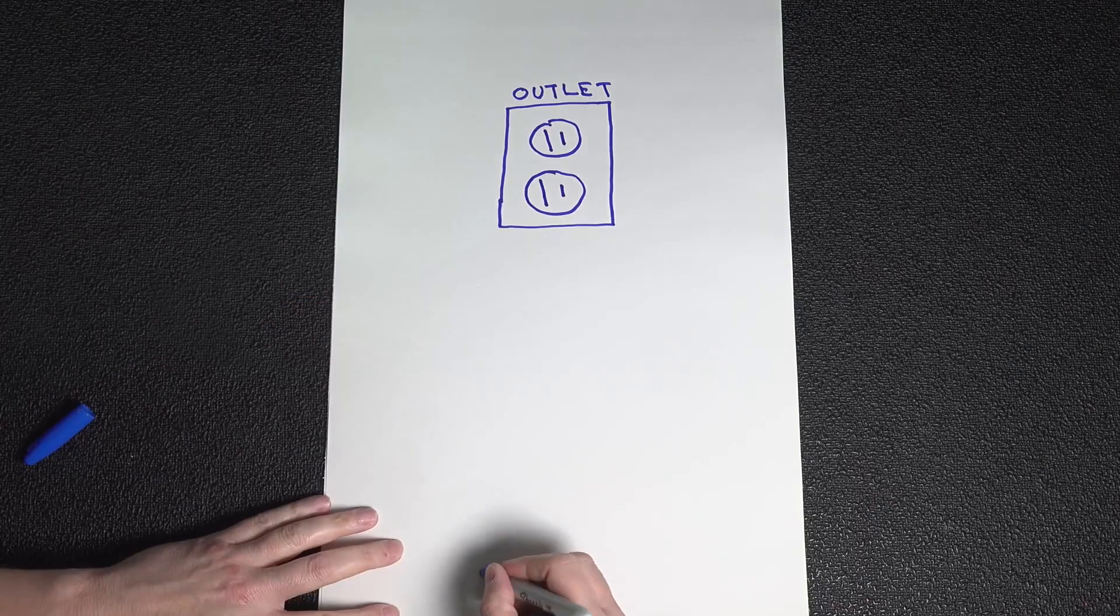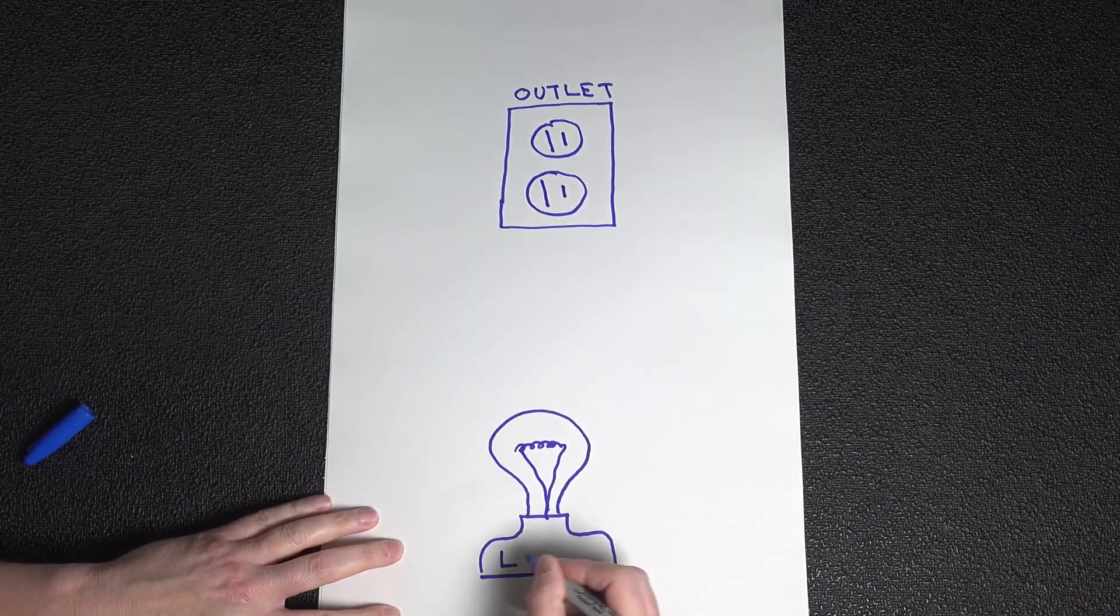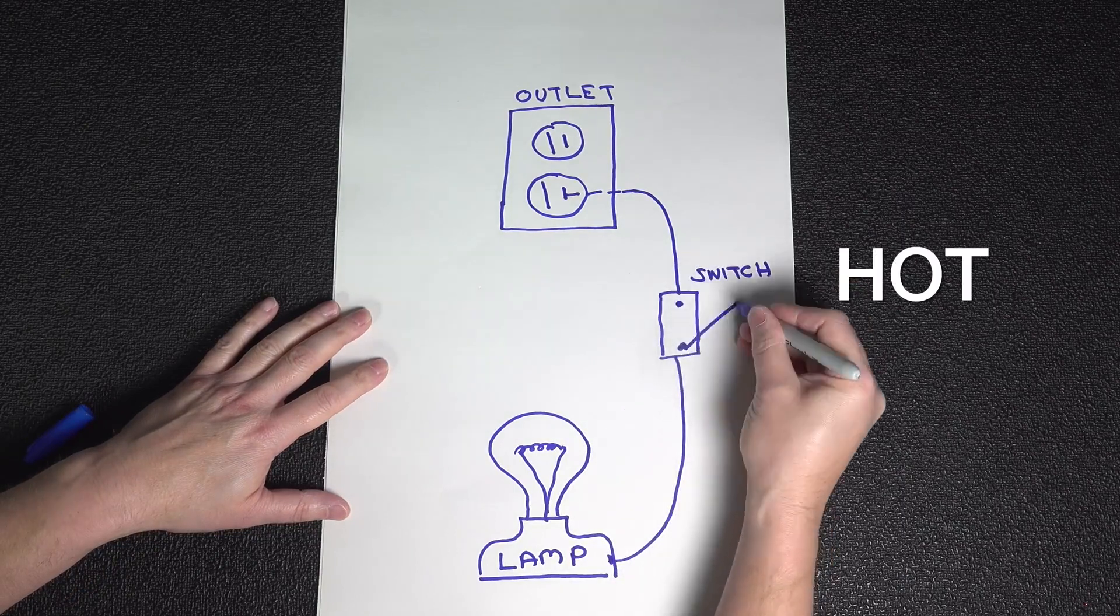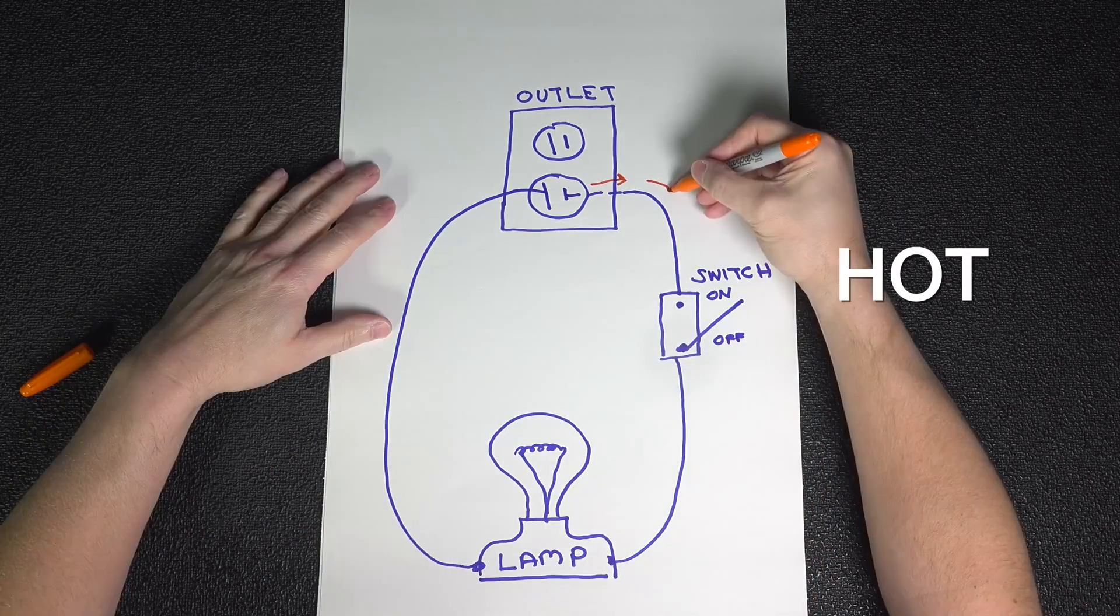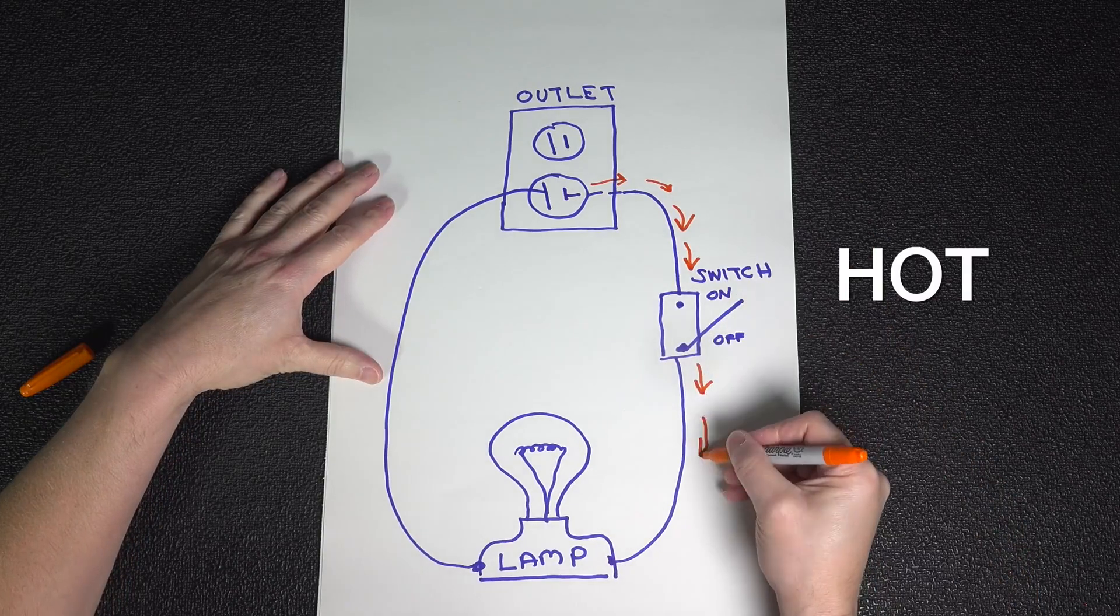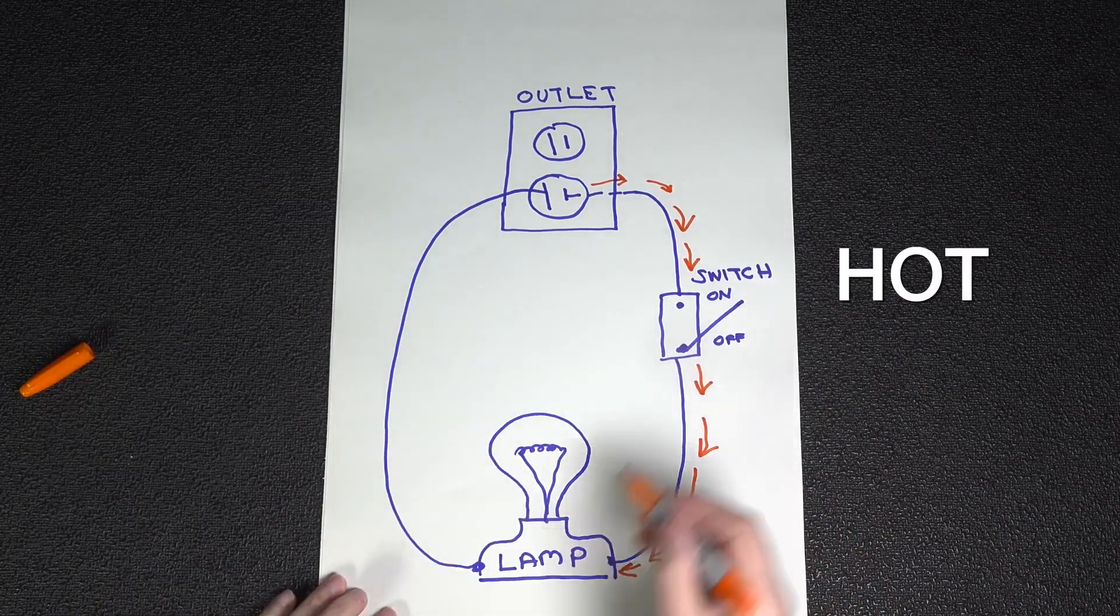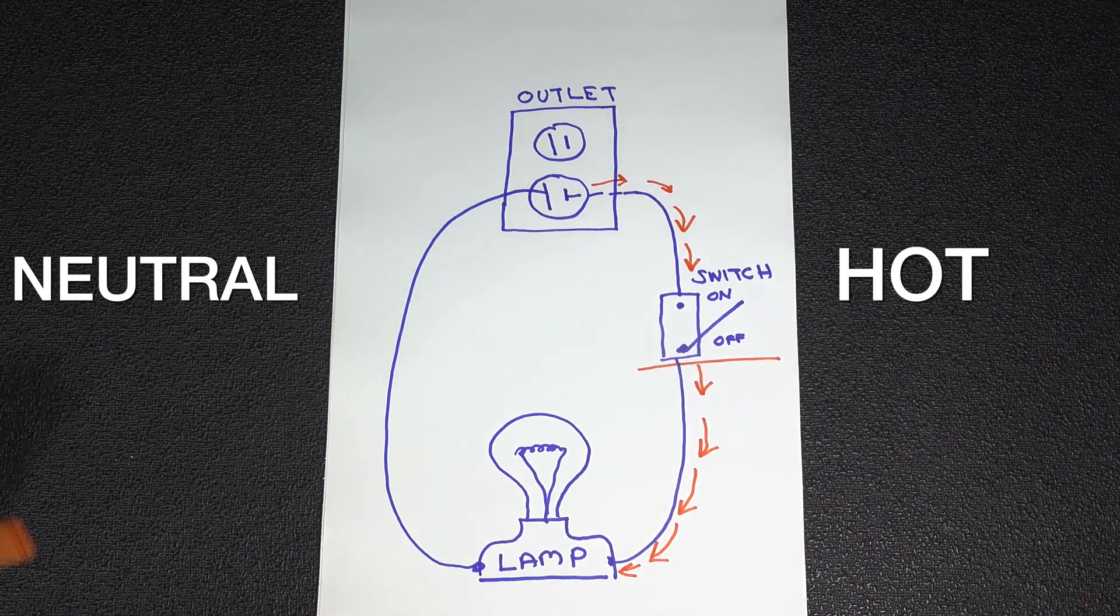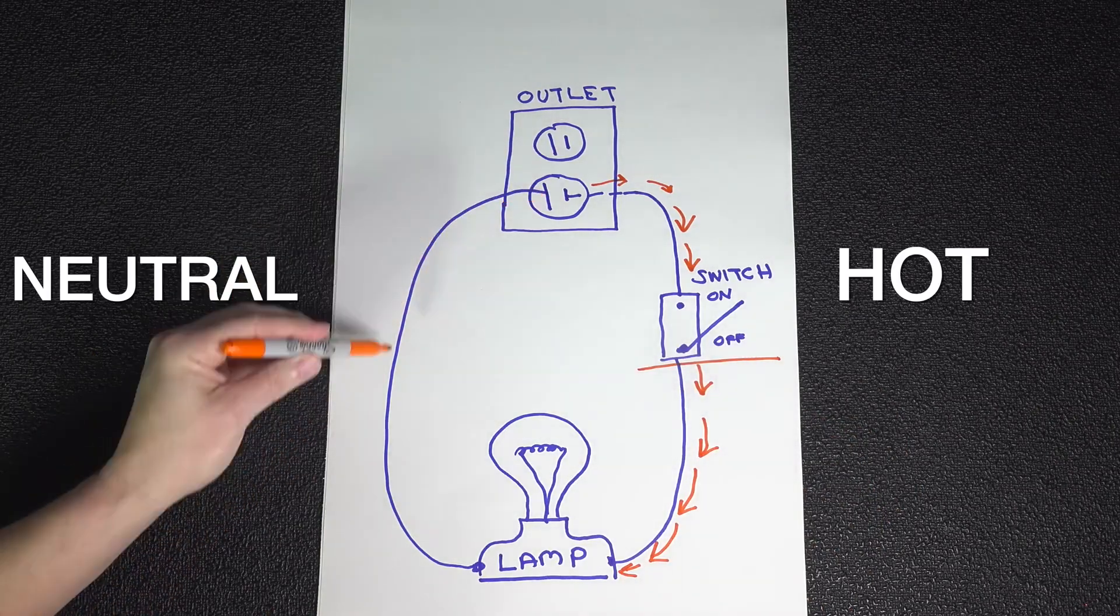When we flip that plug around, we actually reverse the flow of electricity in our circuit. Power switches are only placed on the hot line of the circuit. That means when you switch something off, you stop the flow of power long before it gets to the appliance. But when we flipped it, we actually had the electricity now going through the line of the neutral into the appliance and then into the switch.